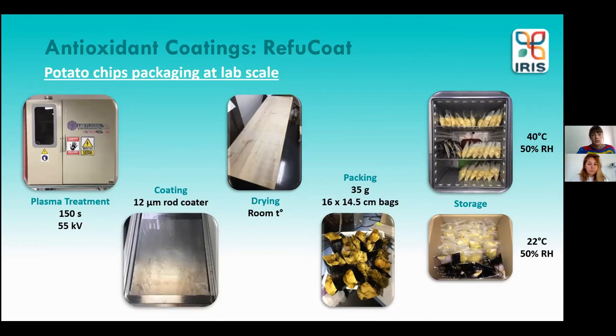At laboratory scale, when optimizing the active coatings in terms of homogeneity, adhesion onto bio-polyethylene, and antioxidant capacity, we will start the shelf life study. The process follows several steps: first, we treat the bio-polyethylene sheets with plasma to make them hydrophilic; then we apply the coating with a 12-micrometer rod coater; let it dry; prepare small bags with the coated bioplastic; package the food; seal the bags; and store them either at room temperature or 40°C for accelerated aging.